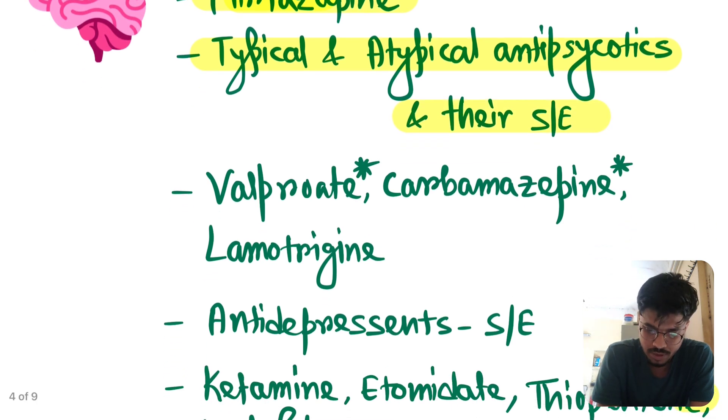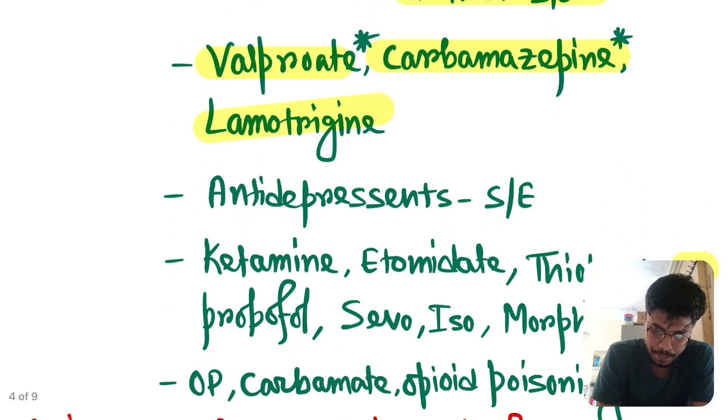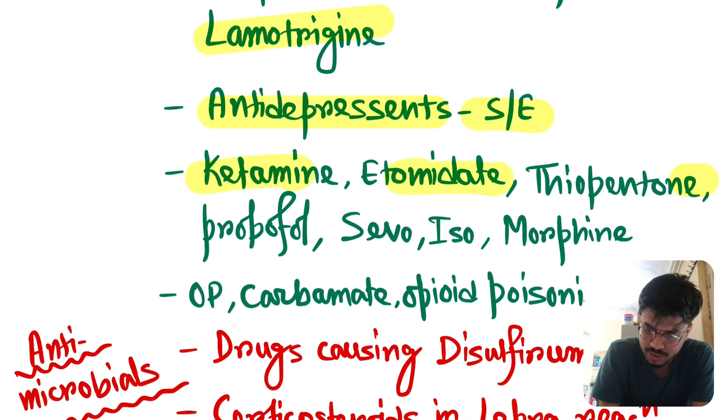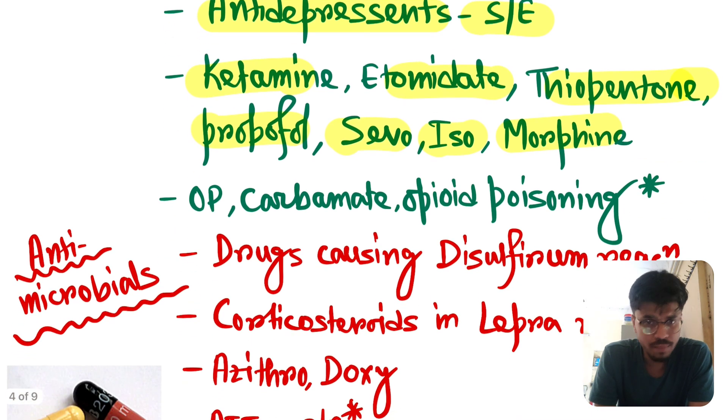What is the mechanism of action of levetiracetam? It is SV2A inhibitor. Now mirtazapine, mechanism of action. Typical, atypical antipsychotics and their side effects. All are important. Now the important drugs. Valproate, carbamazepine, lamotrigine. Mechanism of action, side effects, uses. All are important. You have to read in depth about valproate, carbamazepine. Anti-Parkinson, side effects. Ketamine, etomidate, thiopentone, propofol, sevoflurane, isoflurane, morphine. Just superficially read them. But you have to read carefully about ketamine, etomidate, and thiopentone. These are repeatedly asked topics.